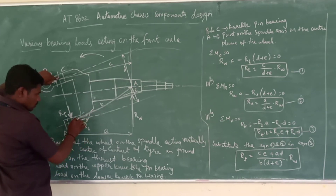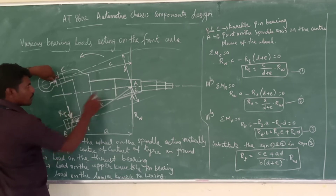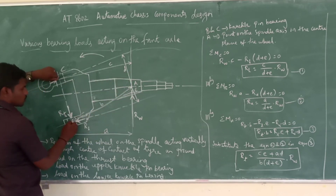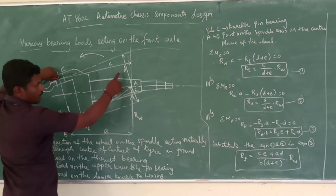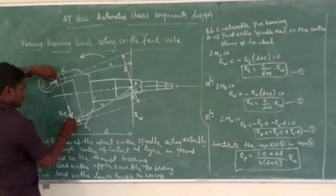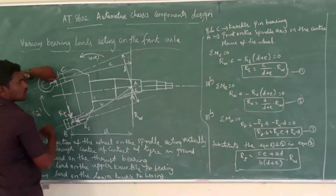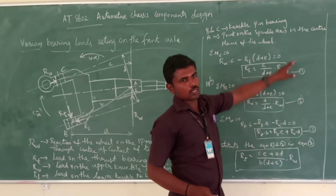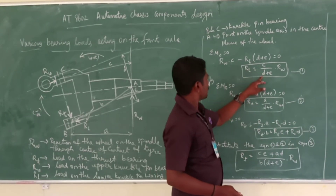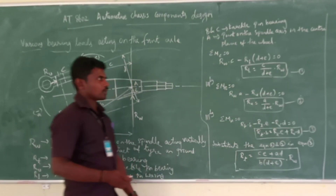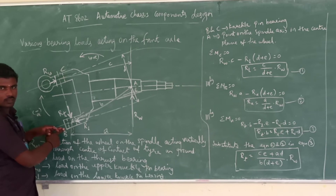The other force RL acts at distance (d + e) from C. RL into (d + e) is in the clockwise direction, so it is negative. Equating to zero: RW × c − RL × (d + e) = 0. Therefore RL = (c / (d + e)) × RW. This is equation number one.